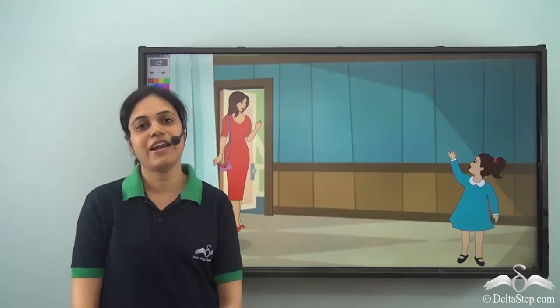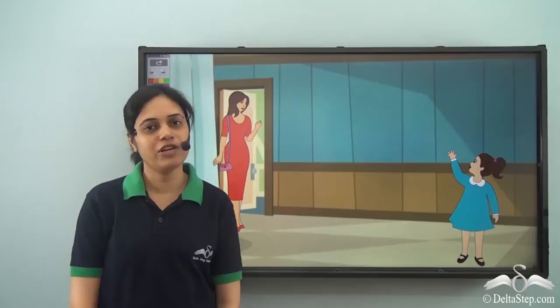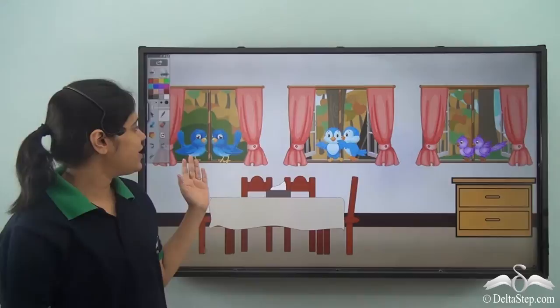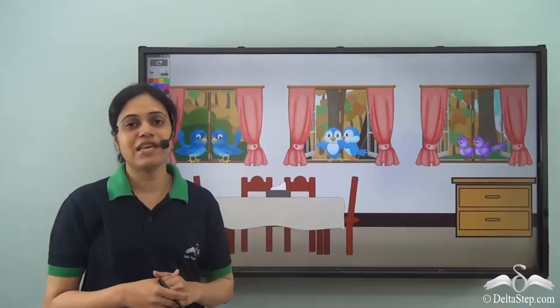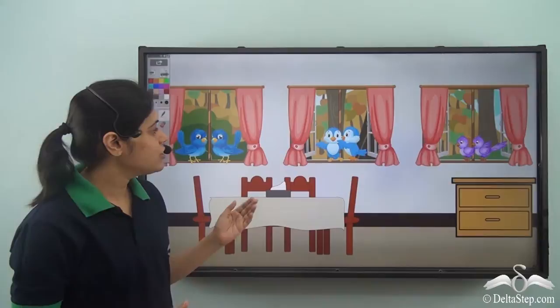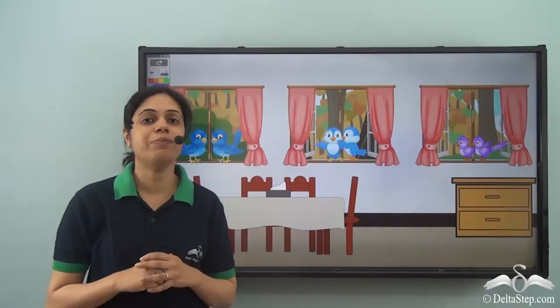Sarah's mother has gone to visit her grandmother. She tells Sarah to be a good girl and take care of the household. Sarah sees birds sitting on the windows and remembers that her mother gives food to these birds every day. Being a good girl, she decided to give food to them, but first she needed to know how many birds there are.